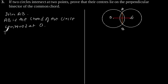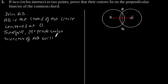Therefore, perpendicular bisector of AB will pass through O. Like this.